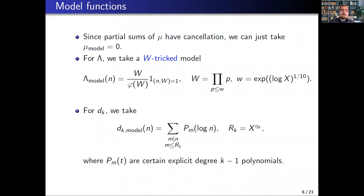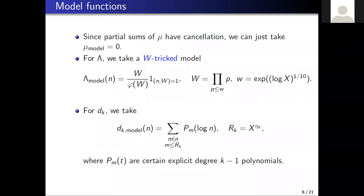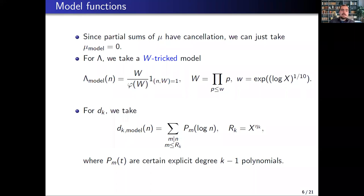This is a lot easier to understand than the original d_k function. Similarly for the von Mangoldt model: we can evaluate its correlations using the fundamental lemma without any problem because the w parameter is not too large. And for the d_k model the divisor sum is truncated to a small power of x. In additive combinatorics, especially in connection with the transference principle, one first models f by a simpler function and then evaluates pattern counts for that simpler function.